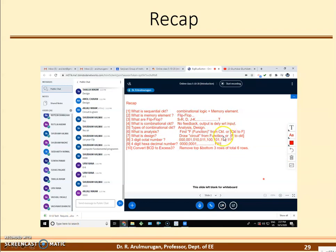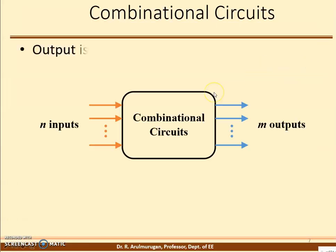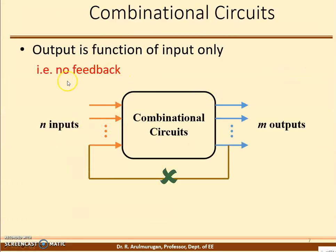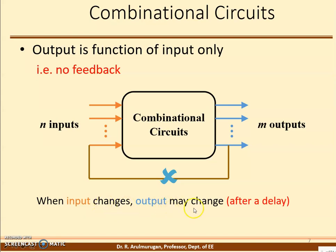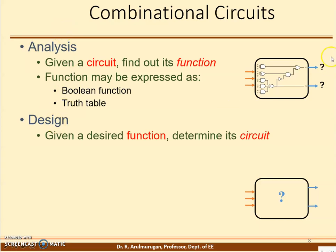So far we have discussed about the combinational circuit, and the other one is the sequential circuit. What is a combinational circuit? No feedback — no feedback means it is called an open loop system. When the input changes, the output gets it with a delay. You give input 5, it produces the result; you change to 6, it doesn't respond immediately — some delay, then the output comes. That is called a delay. Combinational circuit has two models: analysis method and design method. What is analysis method? Circuit is given and you find F1 and F2. There are two possibilities: Boolean function or truth table.